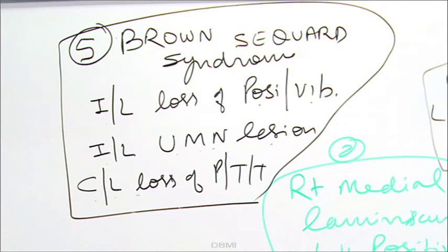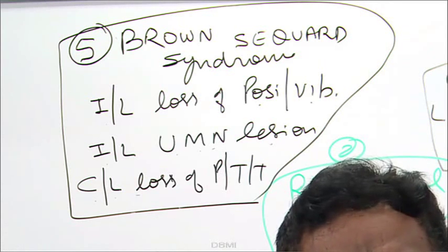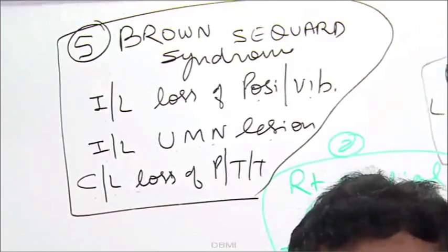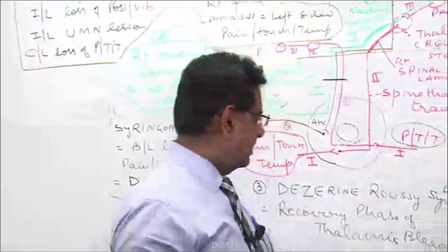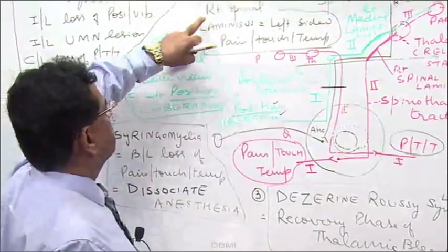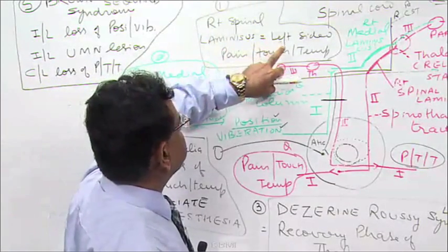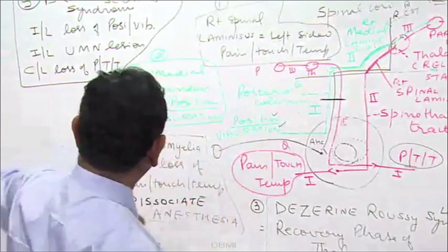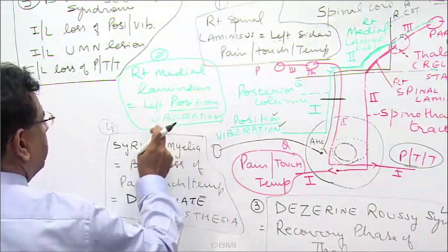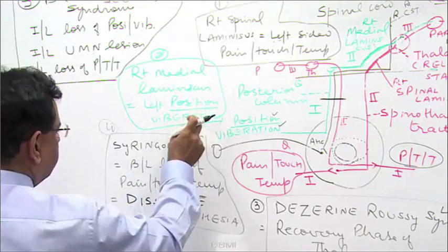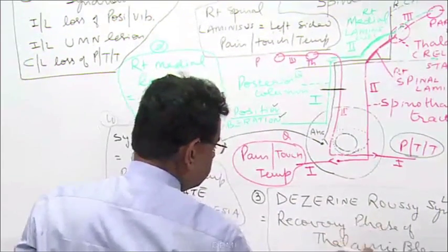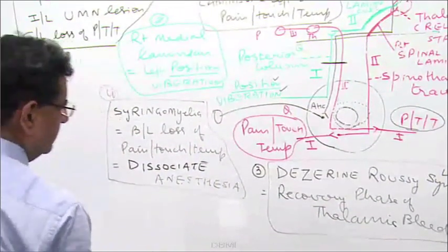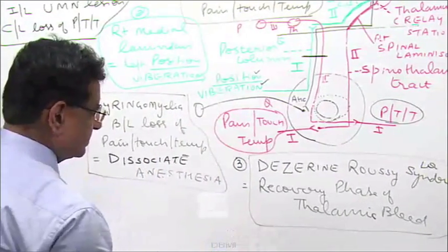Before I go to the next topic of medulla oblongata, let me have a quick revision of the 5 boxes we have learned. Box number 1 was right spinal lemniscus containing left-sided pain, touch and temperature. Second box: right medial lemniscus containing left-sided position and vibration sense. Box 3: Dejerine-Roussy syndrome — recovery phase of thalamic bleed — with contralateral burning sensation in the body.